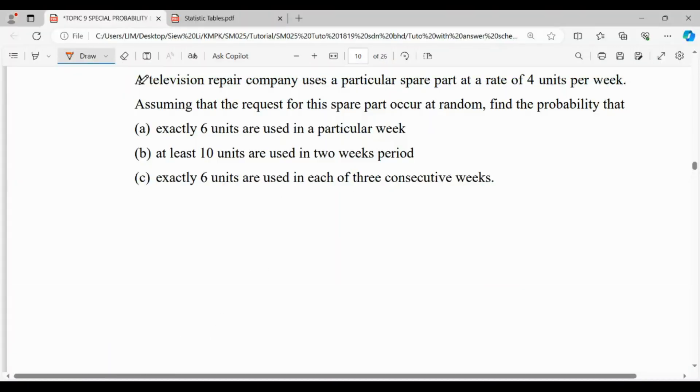Hi everyone, for this question, a television repair company uses a particular spare part at a rate of 4 units per week. Assuming that the request for this spare part occurs at random, find the probability that exactly 6 units are used in a particular week.